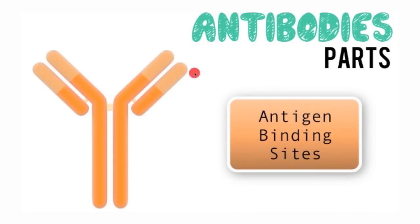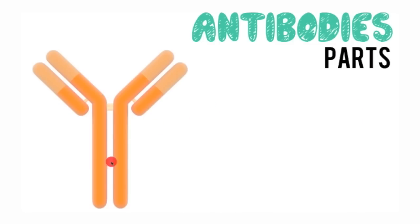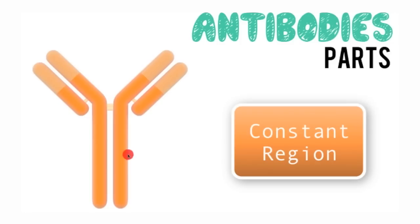The antigen binding sites are the areas that are going to be used to tag the bad guys — the antigens. The darker yellow or orange color represents a constant region of the antibody that doesn't change much from one antibody to the other.